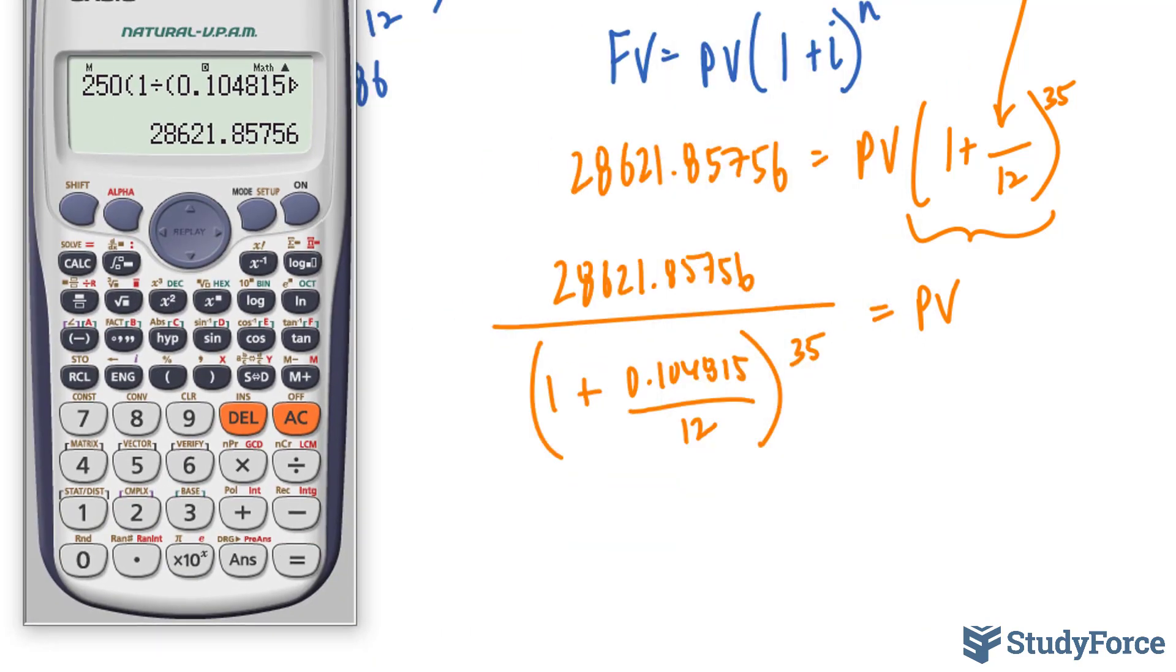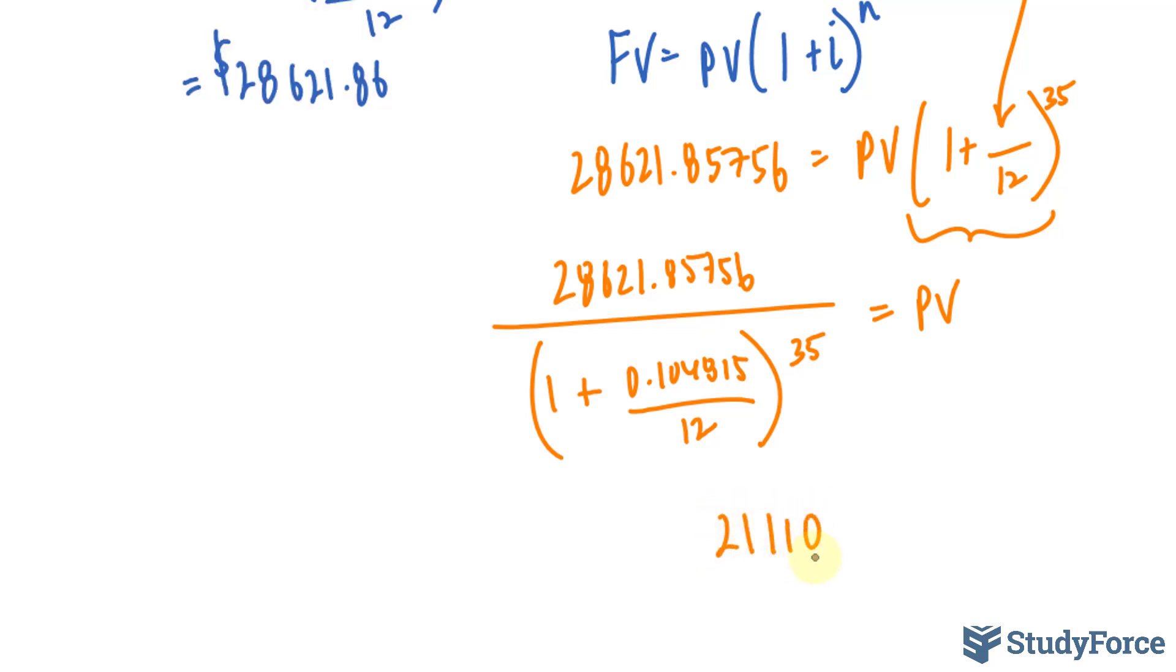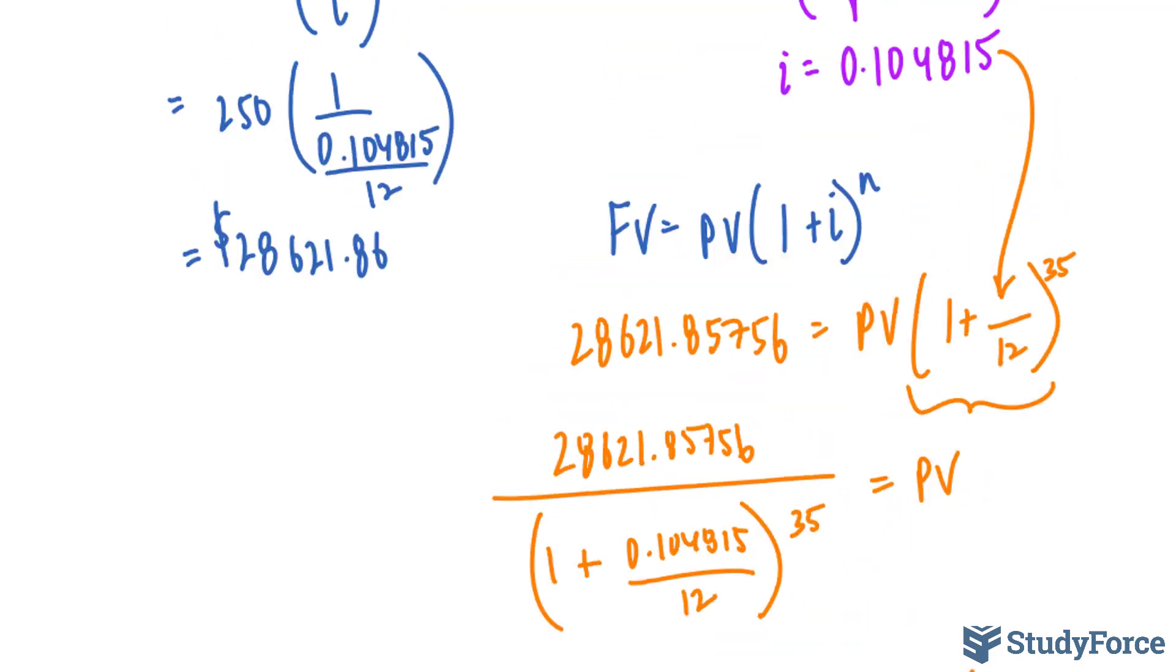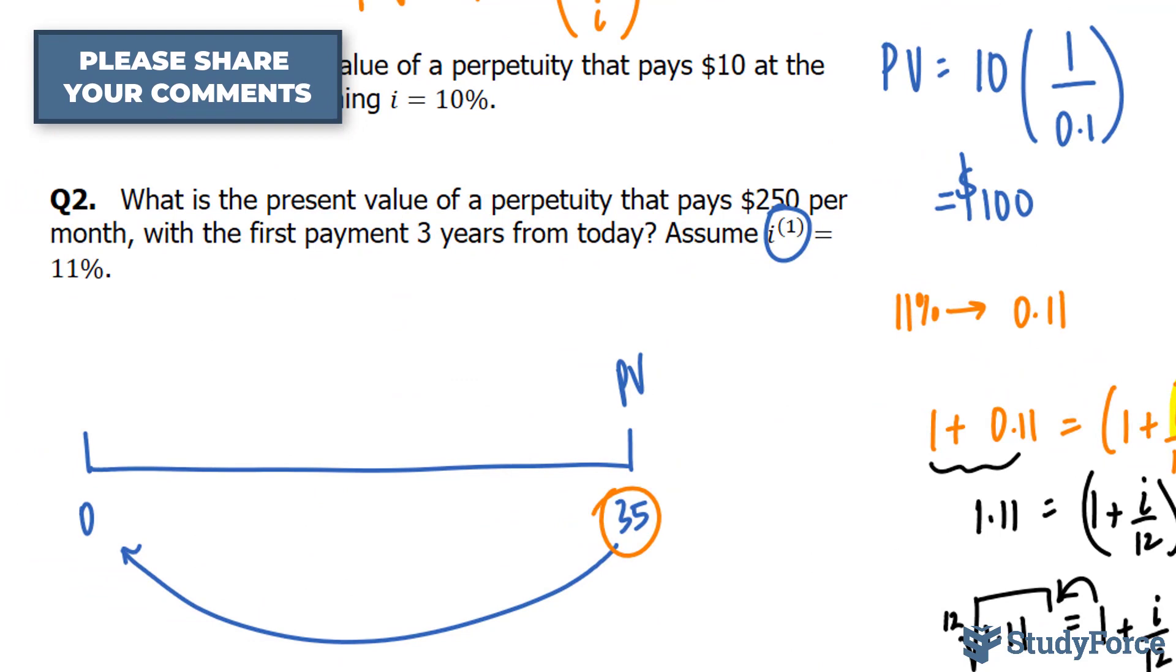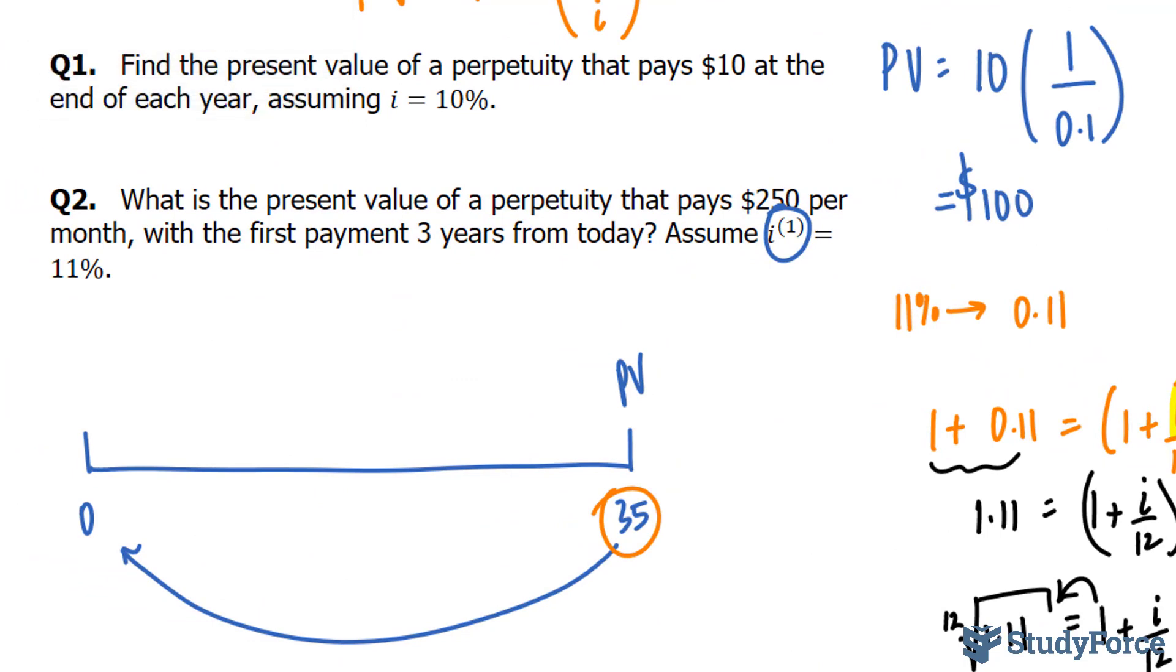So let's use our calculator one last time. We'll take the number on our screen, divide it by 1 plus, and in parentheses, 0.104815, divided by 12, close, raise to the power of 35, and we end up with 21,110.86. So that represents the present value today. If we are to receive $250 per month, three years from today,